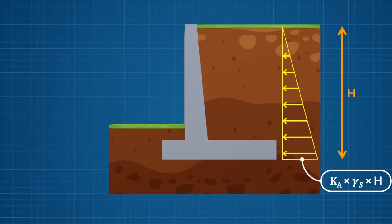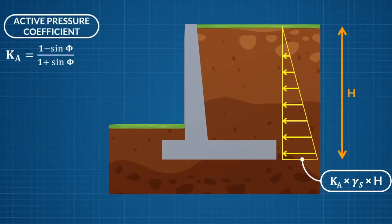Here KA is the active earth pressure coefficient, based on the Rankine theory and calculated by this expression. Here the angle phi is the angle of friction or angle of repose for the soil.